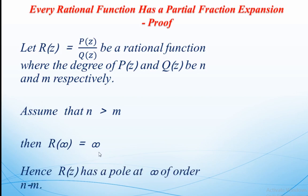Because pole means: for what value of z r(z) is infinity, those values are called poles. So here, when you substitute z = ∞, r(z) is infinity, therefore infinity is a pole. And the order of this pole at infinity is n minus m.